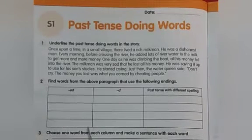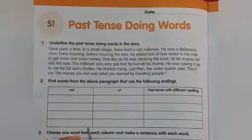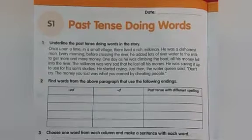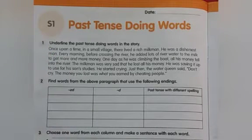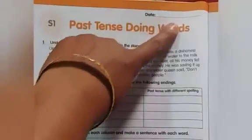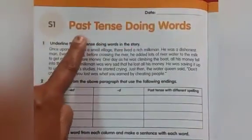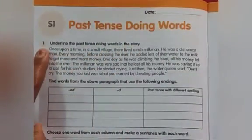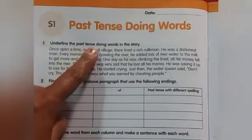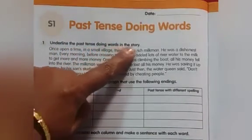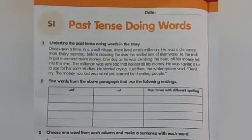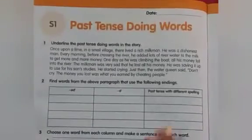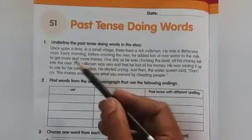Open your workbook children, volume 3 workbook. Page number 10 children. We are in block 18. What is our block name? Writing about the past. Here you have to write the date children. S1, past tense doing words. Bit number 1 is: underline the past tense doing words in the story. As we read the story, wherever we are getting past tense doing words, we will underline them children.